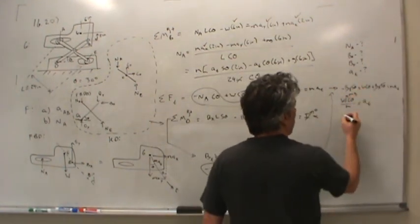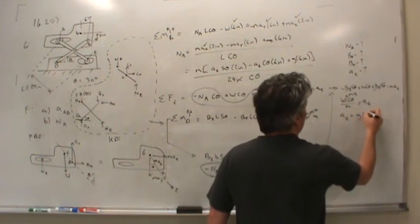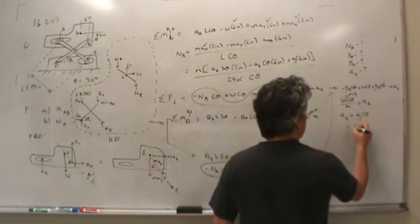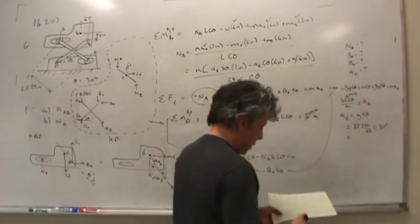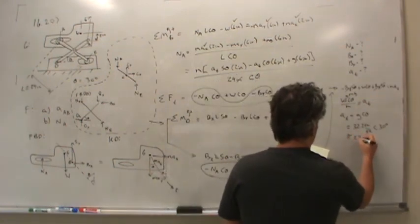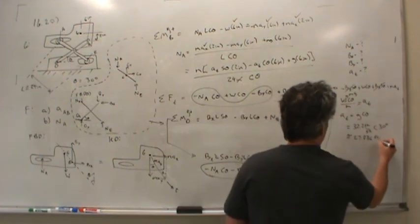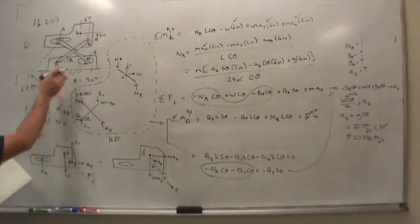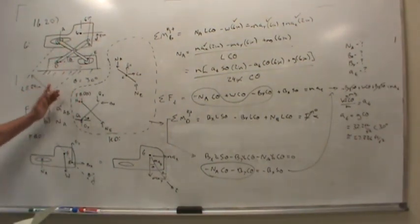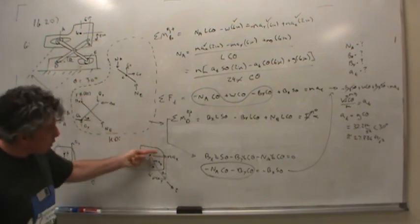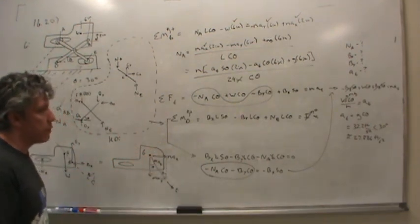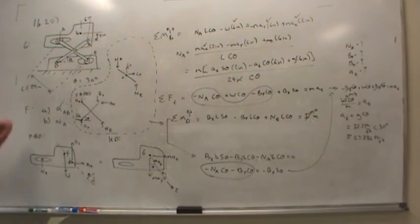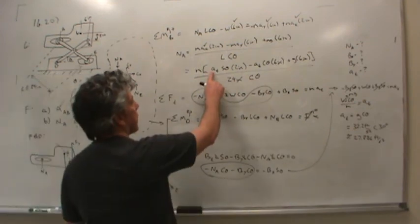Since weight W equals M times g, the tangential acceleration simplifies to AT equals g cosine theta. With g = 32.2 ft/s² and theta = 30 degrees, AT equals 32.2 times cosine 30° which comes out to approximately 27.886 ft/s². This is the magnitude of the acceleration of the upper link AB, directed at 30 degrees off vertical.